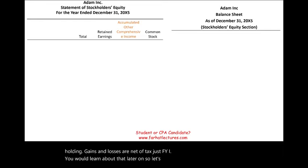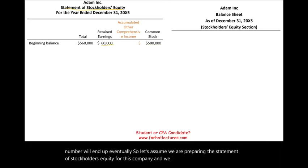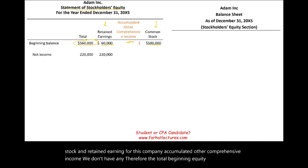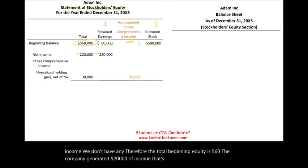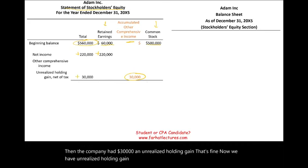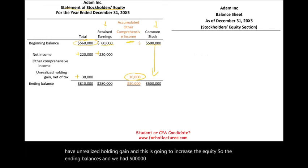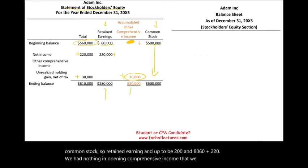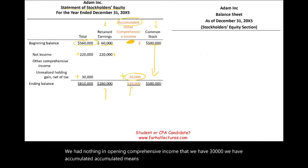Let's look at where this number ends up. Let's assume we are preparing the statement of stockholders' equity. We have a beginning balance of retained earnings of $60,000 and common stock of $500,000, so total beginning equity is $560,000. The company generated $220,000 of income — that increases retained earnings, and we'll assume no dividends. Then the company had $30,000 of unrealized holding gain, which increases equity. Retained earnings end up at $280,000 — that's $60,000 plus $220,000 — and accumulated other comprehensive income is now $30,000, accumulating from nothing.